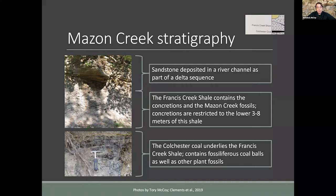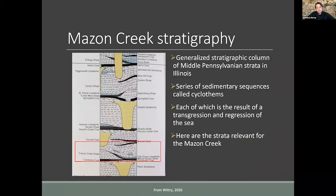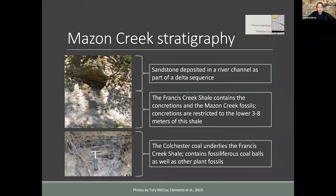On the bottom of the section is the Colchester coal, which is fossiliferous but does not hold the Maison Creek fossils — it contains coal balls with lots of plant fossils. Above that is the Francis Creek Shale containing the concretions and Maison Creek fossils. The Francis Creek Shale is up to 25 meters thick, but the concretions are only found in the lower three to eight meters. At most outcrops, above the shale you see sandstone, though it is not laterally very continuous.